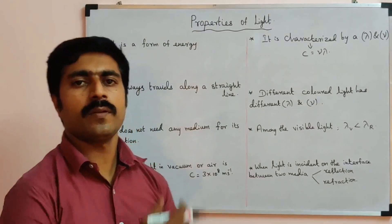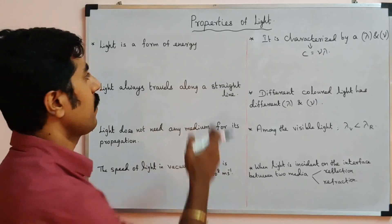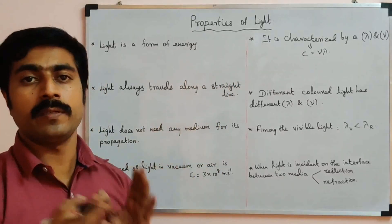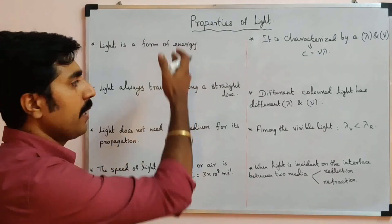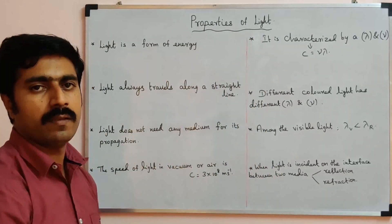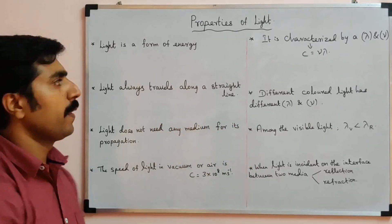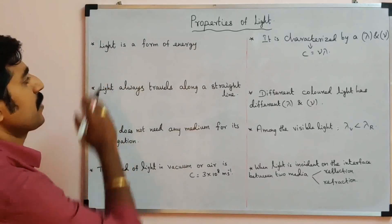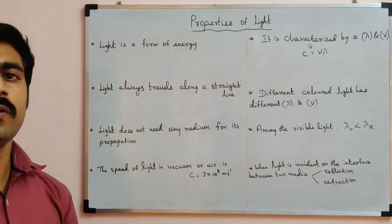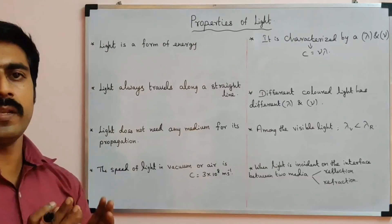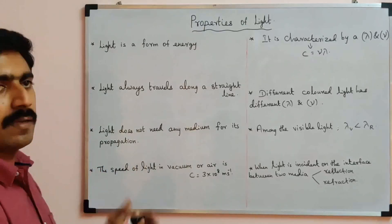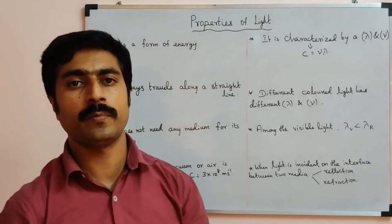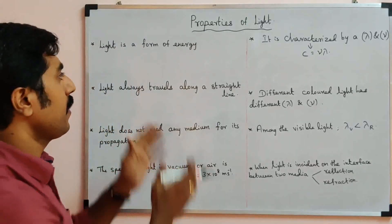Hi students, today we are going to discuss the topic: properties of light. There are eight properties. The first one: light is a form of energy. For example, light energy can be produced from electrical energy.